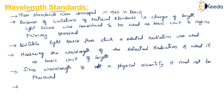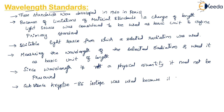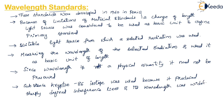In these wavelength standards they used the substance krypton-86. It produces sharply defined interference lines, and its wavelength was most uniformly known at that time in the 1960s.